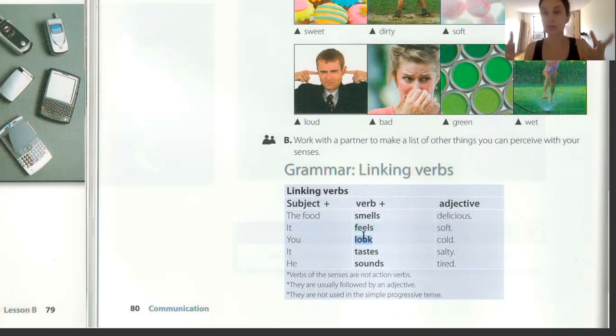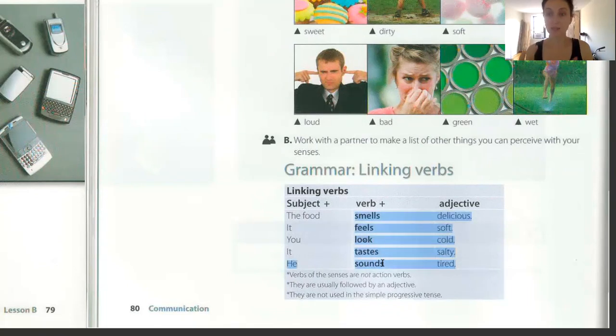So, things, objects, can have these characteristics. They can be soft. They can be loud. They can be sweet, salty, dirty, clean. And in order to describe them, we use these verbs of sense. To smell. To feel. To look. To taste. To sound.